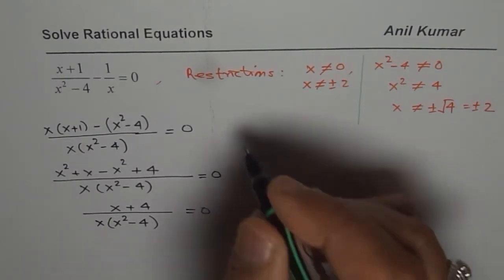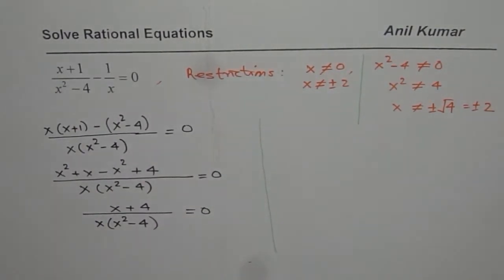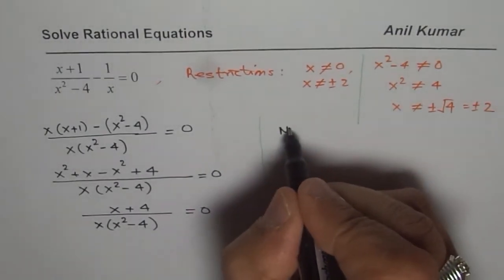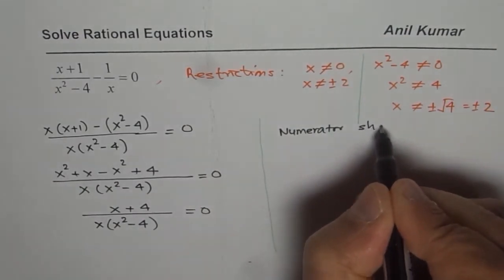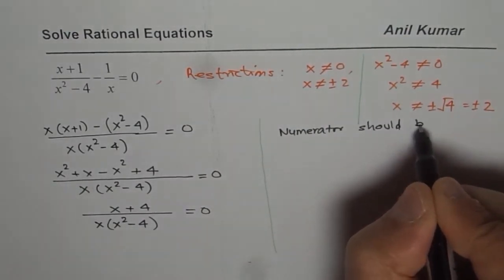So as I said, the numerator should be 0 for the equation to be true. So the condition is that the numerator should be 0.